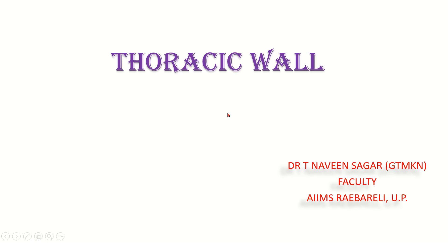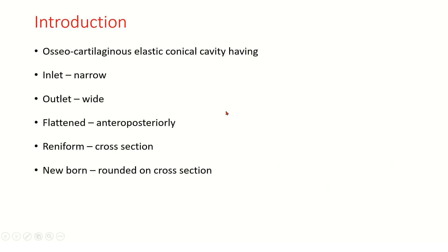Today we will be discussing the thoracic wall and intercostal spaces. The thorax is an osteocartilaginous elastic conical cavity having an inlet which is narrow and an outlet which is wide. It is flattened anteroposteriorly and kidney-shaped on cross section, but in the newborn it appears rounded on cross section.